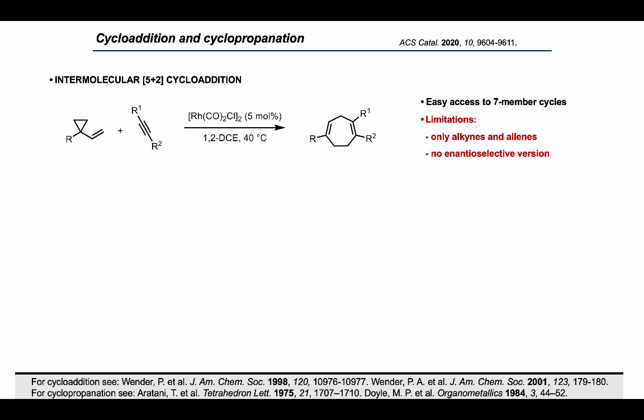This is the first of two big limitations of the intermolecular process, the second one being the absence of an enantioselective protocol, which instead has been reported for the intramolecular version. This second limitation is also partly a consequence of the first one, as the use of alkynes instead of alkenes cannot introduce sp2 carbons in the product molecule. Therefore, if we want to introduce a chiral element, this must come from the VCP cycloaddition partner.